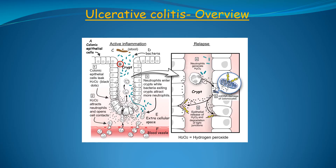At the top, we have the stool, which is on the inner surface of the colon and has a very high concentration of bacteria, shown as the small green rods indicated by the arrow. Next, we have the extracellular space, which is all the space surrounding the colonic epithelial cells outside of the crypt. This space is very important because that's where hydrogen peroxide will leak into when diffusing out from colonic epithelial cells. Towards the bottom, I've highlighted the blood vessels that contain the neutrophils — the blood vessels are very important because that's where the neutrophils come from, which enter the colonic epithelium to cause inflammation and ulcerative colitis.